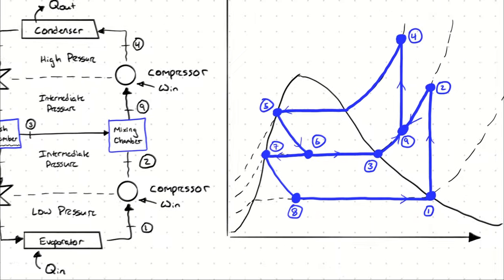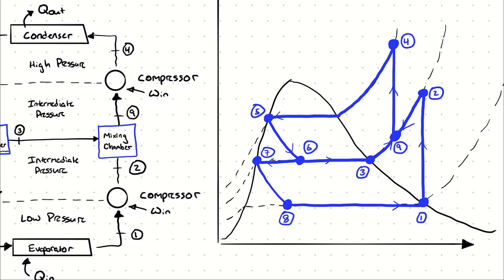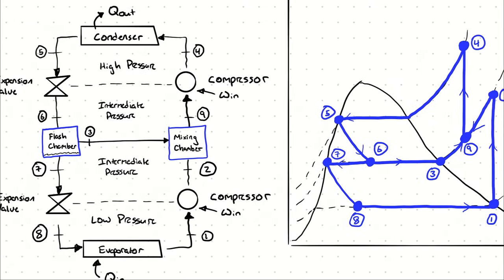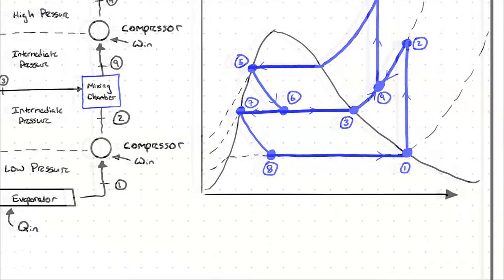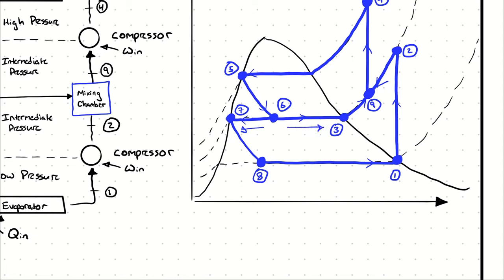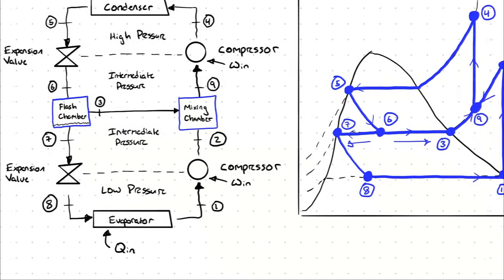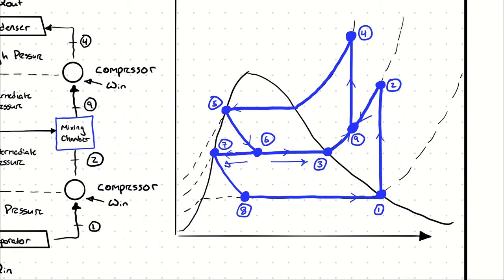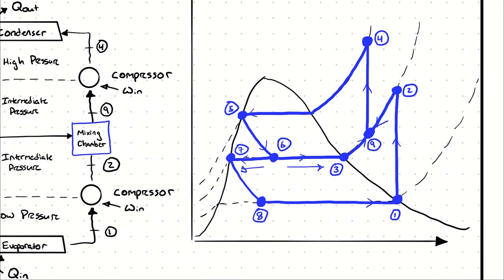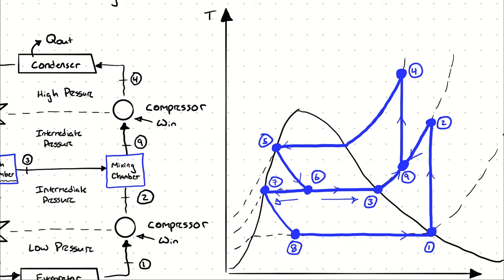Looking at the TS diagram, we can get a better idea of what's happening. We have a stream at 4 and 5, representing how much heat is being pushed out of our condenser. It's expanded across an expansion valve at state 6. Some of it leaves as liquid at 7, some as vapor at 3. The stream at 7 is expanded again down to low pressure at state point 8, pushed across an evaporator to state point 1. The process from 1 to 2 is an isentropic compression process drawn as a vertical line up to the intermediate pressure. State points 2 and 3 are mixed together to produce state 9, whose relative position between 3 and 2 is represented by the proportion of mass flow rates. Then state point 9 goes through an isentropic compression process to the high pressure at state point 4.